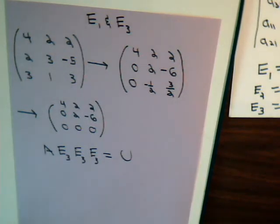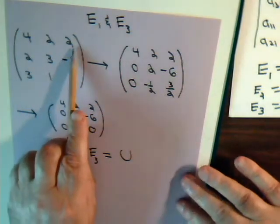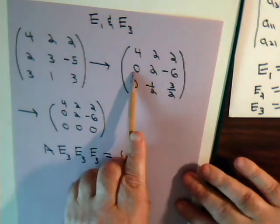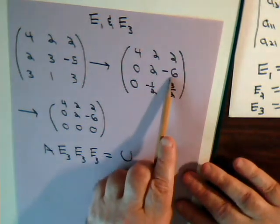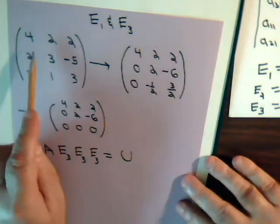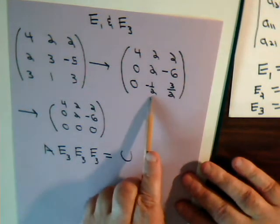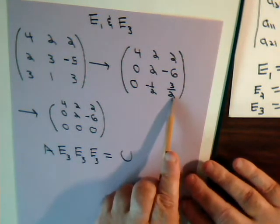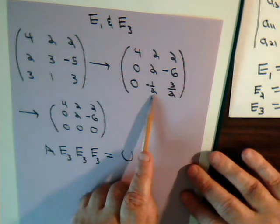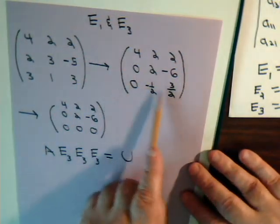So here we have four, two, two in the first row. We multiply the second row by negative one-half and add it to the next row, making that element zero. This gives two and negative six. Then we multiply by negative three-fourths and add to make another element zero, giving negative one-half and three-halves. We don't want to multiply through by negative two to clear fractions, because that would be multiplying a row by a constant — which we want to avoid.